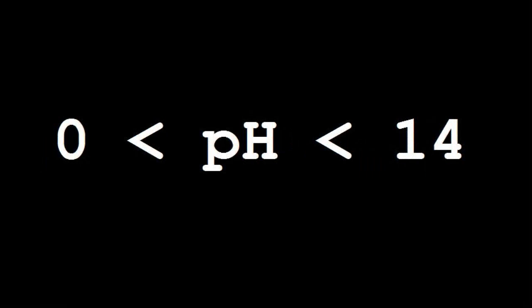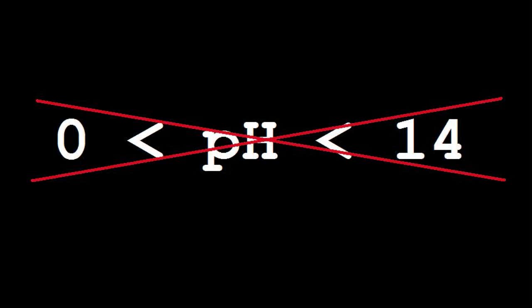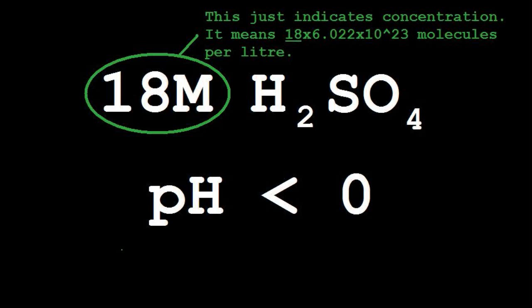You might be under the misconception that the pH scale ranges from 0 to 14. This is not the case. There is actually no limit imposed by the definition of pH. Many laboratories will have concentrated sulfuric acid, which has a pH less than 0. The strongest acid currently known is fluoroantimonic acid, which has a pH of minus 25.